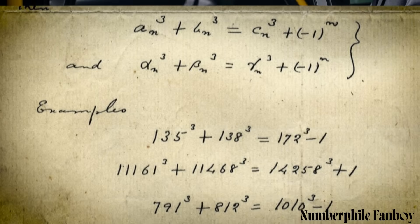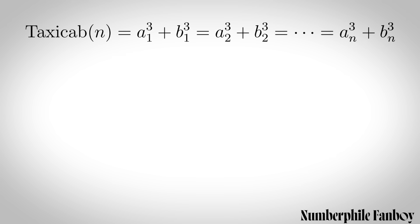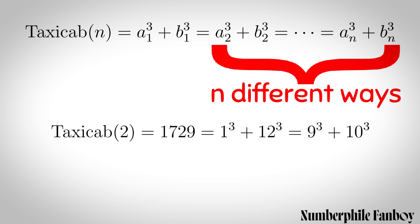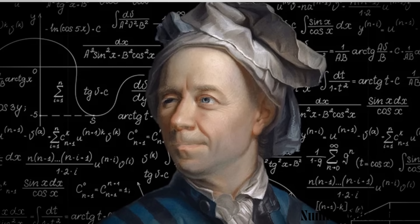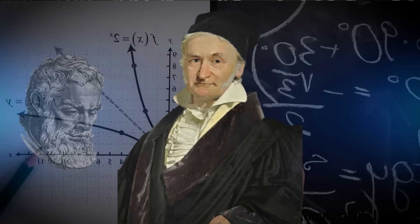Taxicab numbers are the smallest numbers that can be expressed as the sum of two positive cubes in n different ways. For example, taxicab(2) equals 1729, since it's the smallest number that can be expressed as the sum of two positive cubes in two different ways.